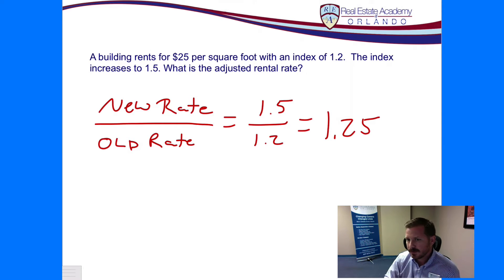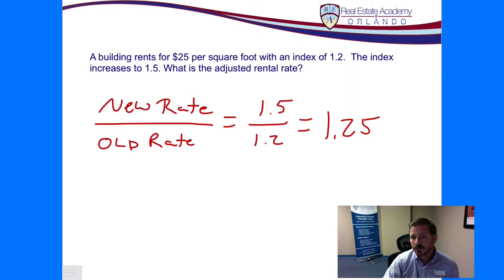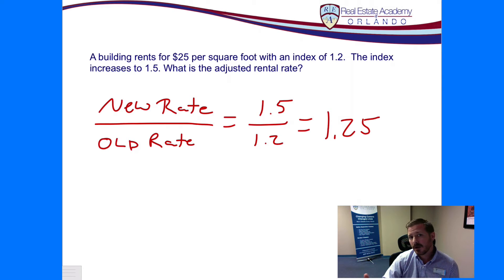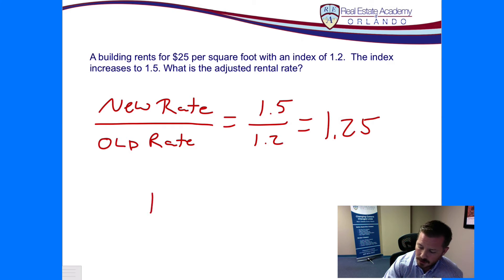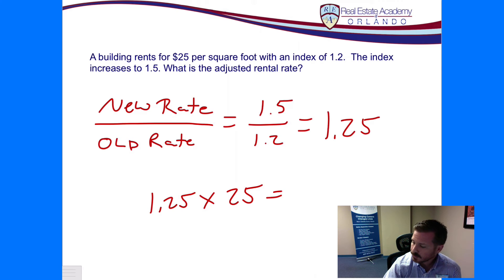Now this isn't our final answer, but it's the most important step — it tells us how much the rent is going up. At 1.25, we know the rent is increasing by 25%. If the rent didn't change at all — if we started with an index of 1.2 and the index was still 1.2 one year later — we'd do 1.2 divided by 1.2 and get 1.0, meaning the rent is 100% of what it was, so no change. In this case we have 1.25, so the rent is going up by 25%. The rent is $25 a foot, so we multiply that by 1.25 and our new rental rate is $31.25 per square foot.